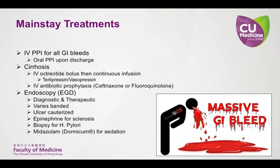IV proton pump inhibitors are recommended for all patients regardless of cause, as an 80 milligram bolus followed by an 8 milligram per hour continuous infusion. Less acid in the stomach allows clots to stabilize and promotes hemostasis. Gastric acid inhibits platelet aggregation, impairs clot formation, and promotes fibrinolysis. The goal is a pH greater than 6. Histamine antagonists or H2 blockers are ineffective in sustaining a pH of 6 or greater and producing significant clinical outcomes. IV PPIs reduce rates of re-bleeding and duration of hospital stay in patients with an ulcer.